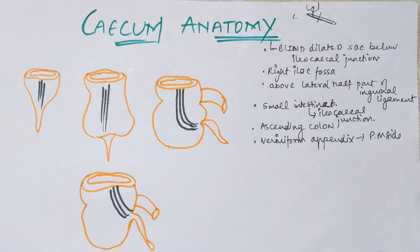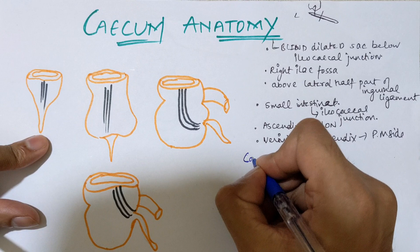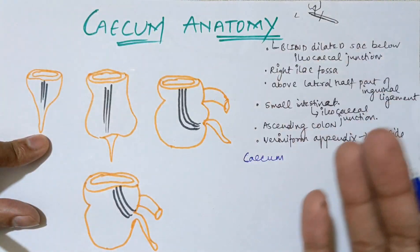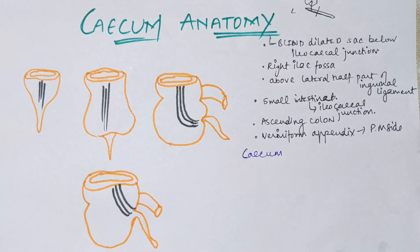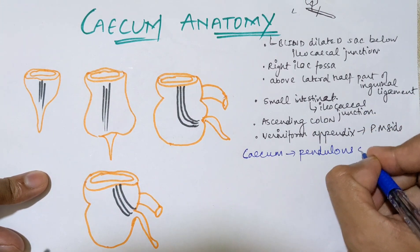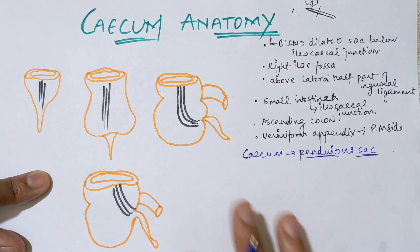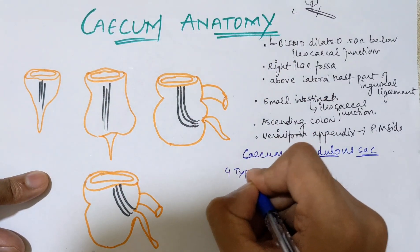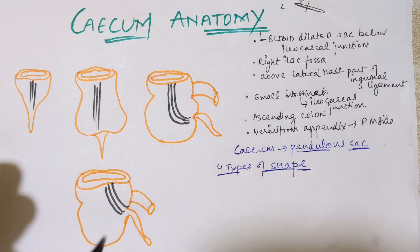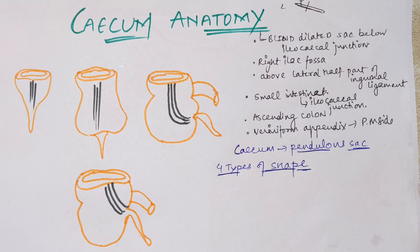The cecum has different shapes from the embryological period. As development progresses it forms its actual shape, but during development it passes through different forms. The cecum arises from the cecum bud present in the primary intestinal loop, from which both the cecum and vermiform appendix develop. Overall, the cecum has four types of shapes.